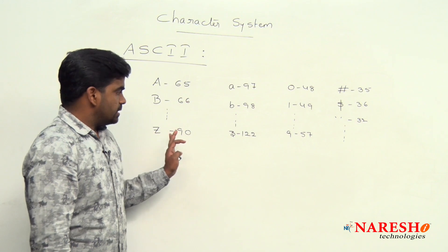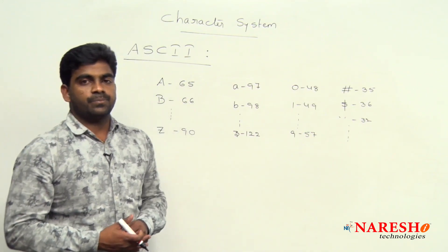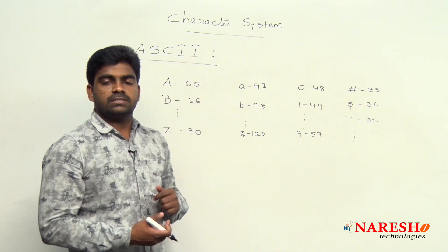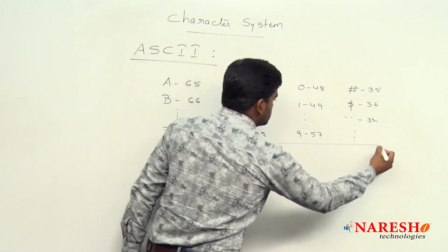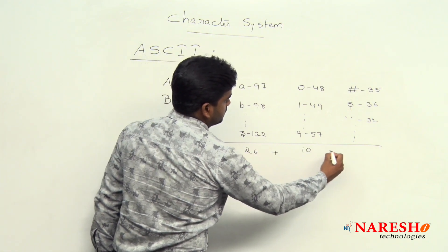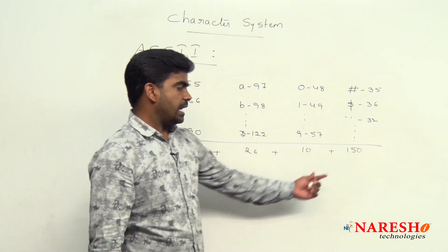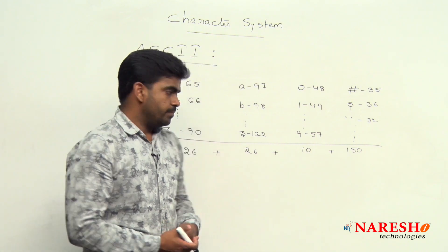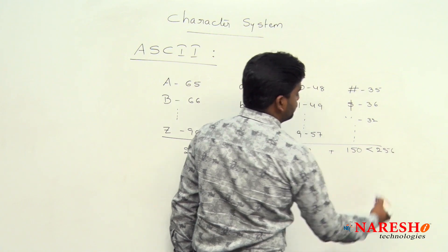Every language contains alphabets, digits and special symbols, and every symbol is assigned one constant integer value. If you add all these constants — 26 capital letters, 26 small letters, 10 digits, and at most around 150 special symbols — definitely the total value is less than 256 only.